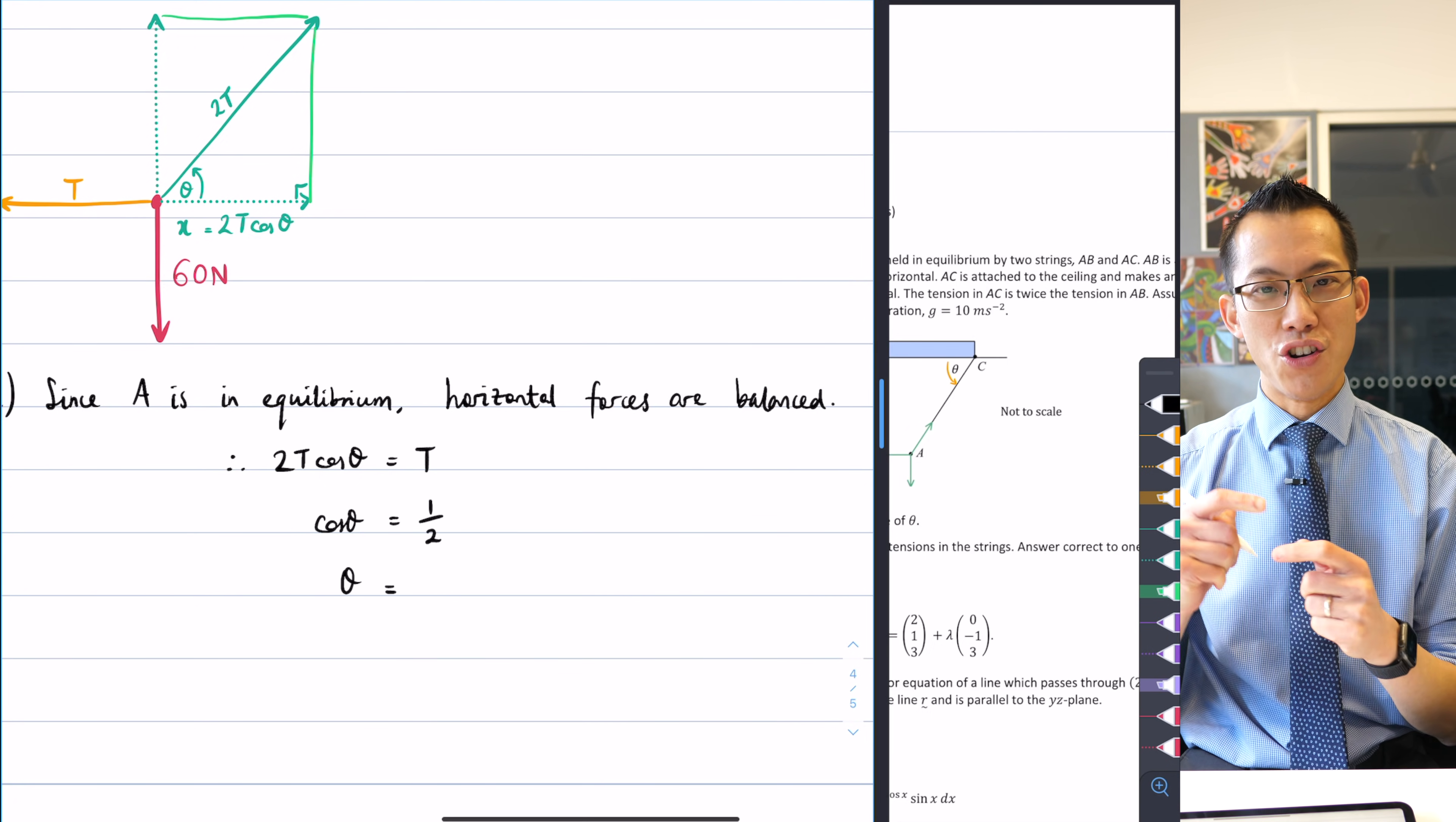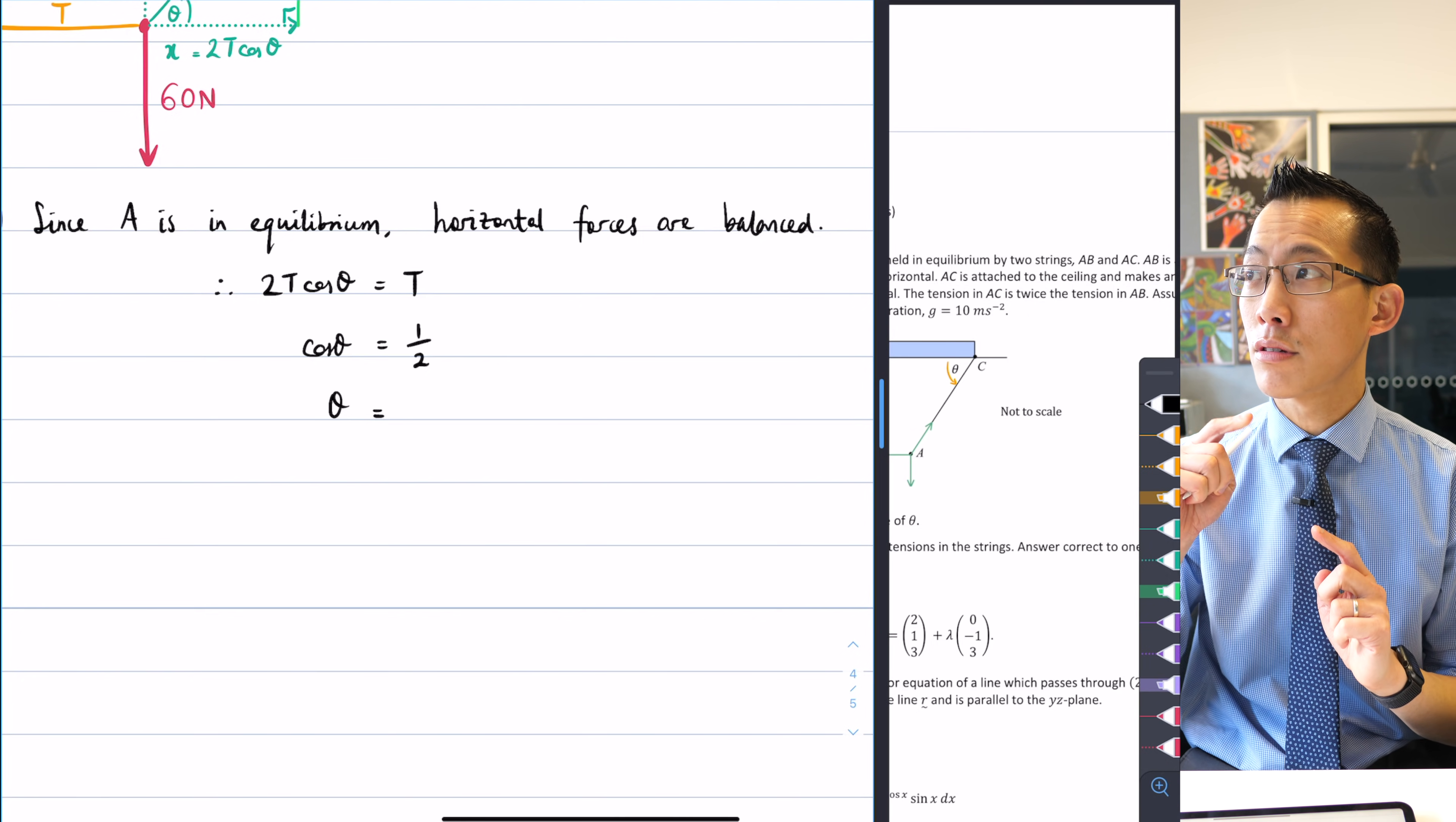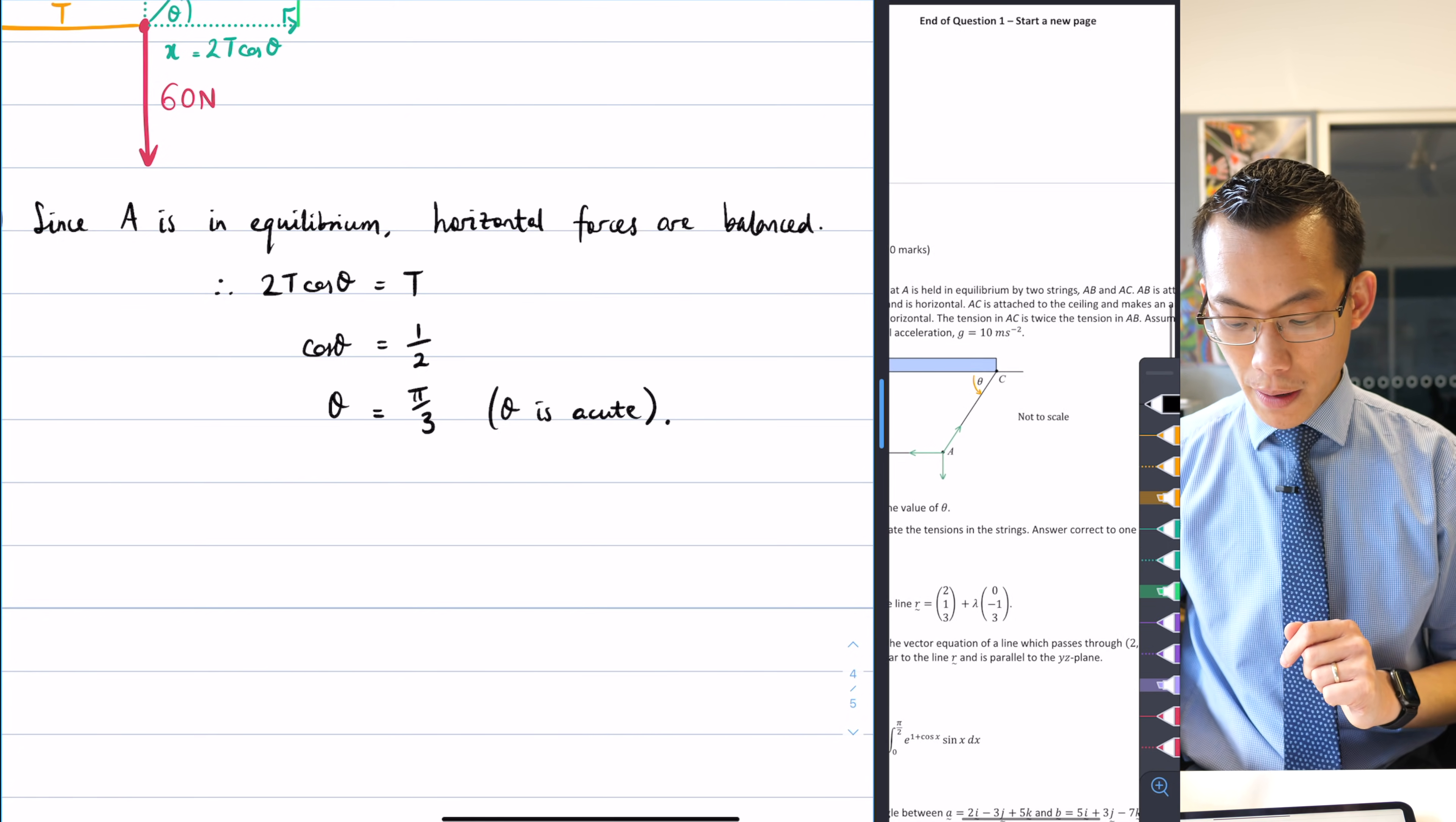And theta therefore, noting that theta has to be acute because have a look at where it's positioned in a right-angled triangle. Since theta has to be acute, the angle that gives cos to be a half is pi on 3. I'll reason that because theta is acute. So that was part 1, I've found the value of theta, and I'm going to use that for part 2.